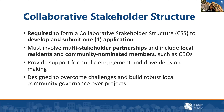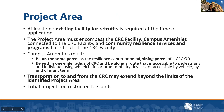For project development grants, at least one existing facility is required at the time of application. The project area must encompass the CRC facility, campus amenities connected to the CRC facility, and community resilience services and programs. Campus amenities must be on the same parcel as the resilience center or an adjoining parcel, or within a one-mile radius and along a route accessible to pedestrians, wheelchair users, or by vehicle by the end of the grant term. Applications with more than one CRC facility must explain how the separate facilities will serve distinct communities within their region.